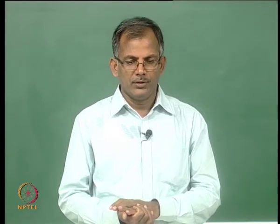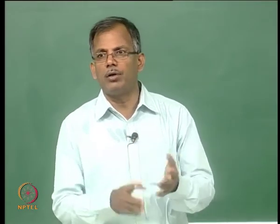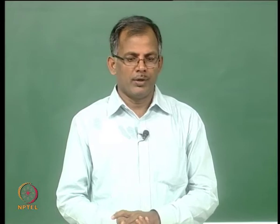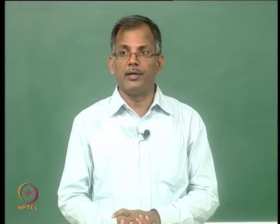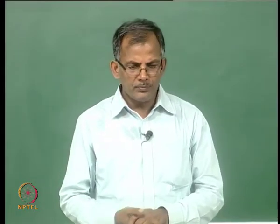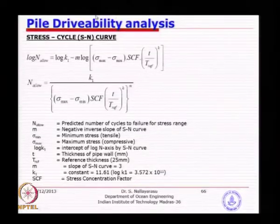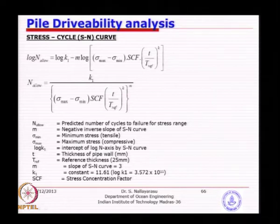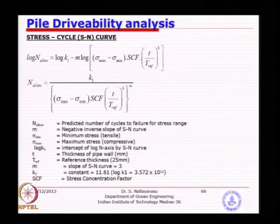You can look at the DNV code or the Department of Energy guidance, where they describe the seam connections. Once you know the material constant and slope of the SN curve, what you need is sigma max and sigma min obtained from your drivability analysis. The stress concentration factor has to be calculated depending on the type of welding, considering that the pile has a constant outer diameter but a varying wall thickness along the length.